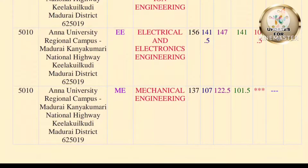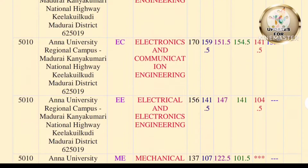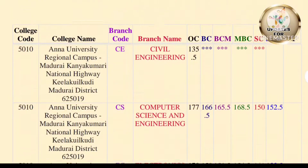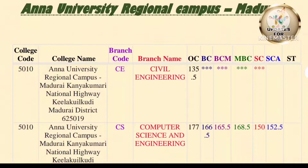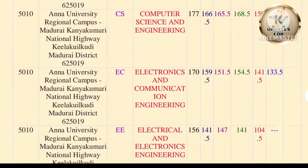Next, Mechanical Engineering. OC: 137, BC: 107, BCM: 122.5, MBC: 101.5. This is the average cutoff. This is the cutoff for the University Regional Campus.